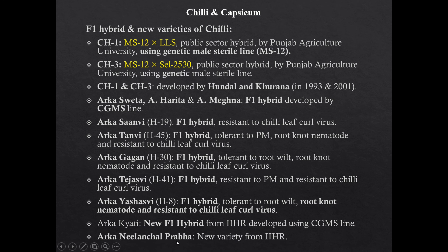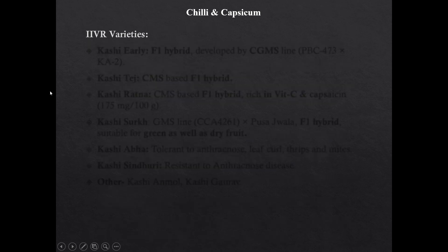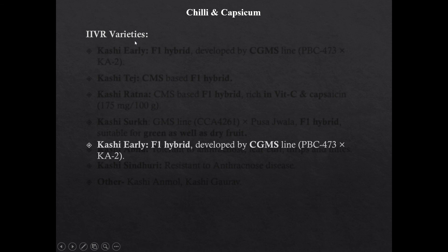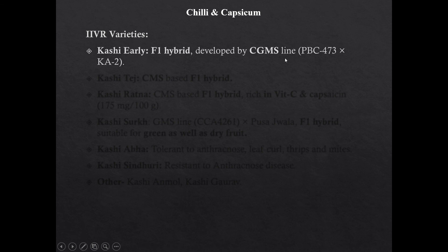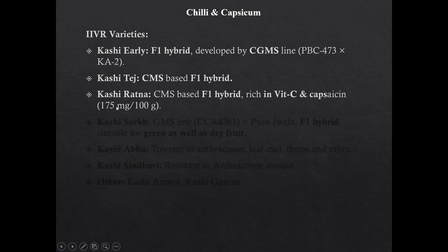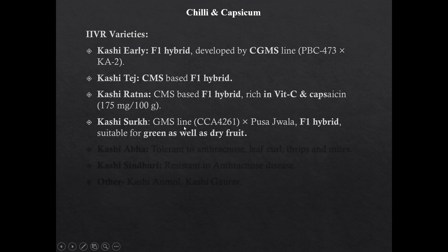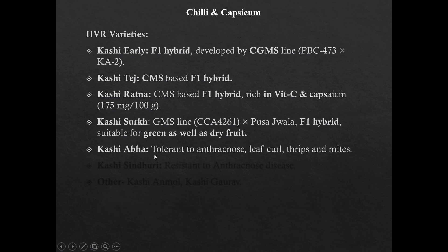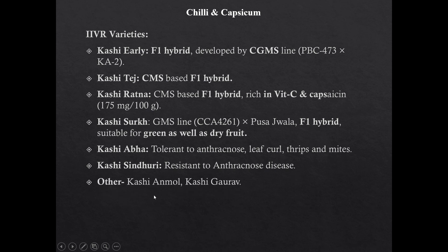Arka Khyati is a new F1 hybrid from IIHR developed using CNGMS line. Arka Nilanchal Prabha is a new variety from IIHR. Varieties from Indian Institute of Vegetable Research: Kashi Arli is a F1 hybrid developed using CNGMS line. Kashi Tej is a CNGMS-based F1 hybrid. Kashi Ratna is a CNGMS-based F1 hybrid, high in vitamin C and capsaicin. Kashi Surk is developed by crossing CNGMS line into Pusa Jala and is suitable for both green and dry purpose. Kashi Abha is tolerant to anthracnose, leaf curl, thrips and mites. Kashi Sindhu is resistant to anthracnose disease. Other varieties are Kashi Anmol and Kashi Gaurab.